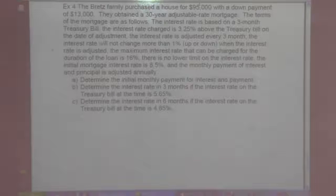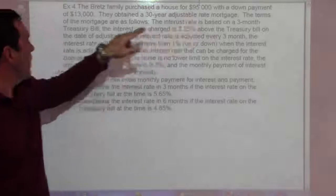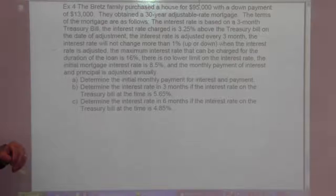So for our last example from this section, the Breds family purchased a house for $95,000 with a down payment of $13,000. They obtained a 30-year adjustable rate mortgage. The terms on the mortgage are as follows.